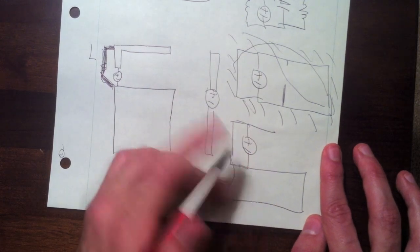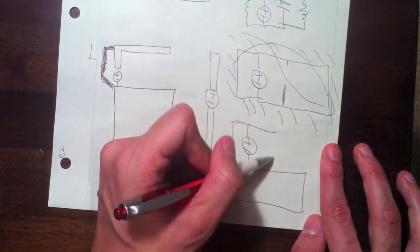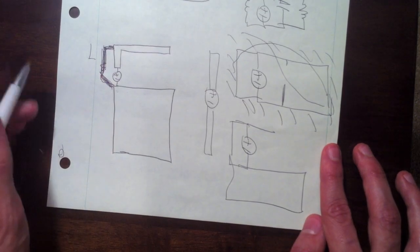The antenna itself doesn't know the difference because it's an open circuit here, and this is an open circuit. Electrically, the antenna thinks it's the same.